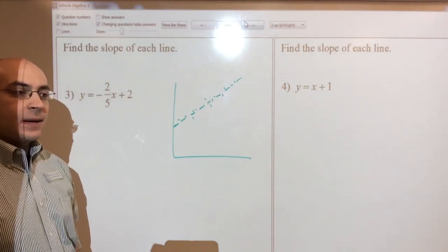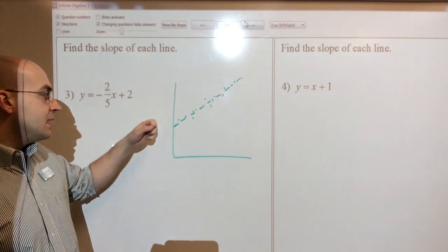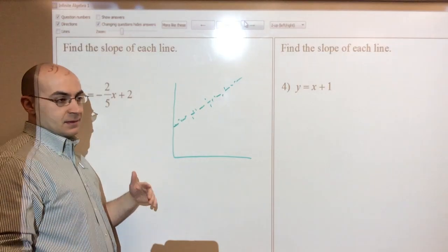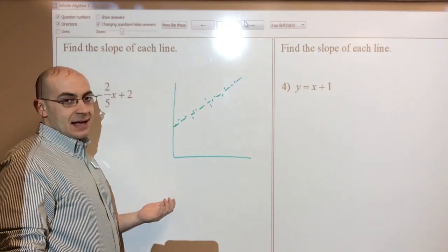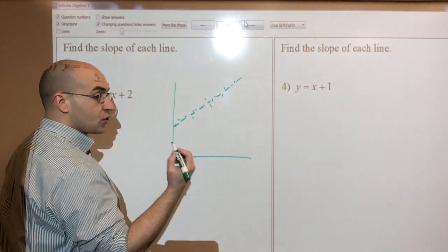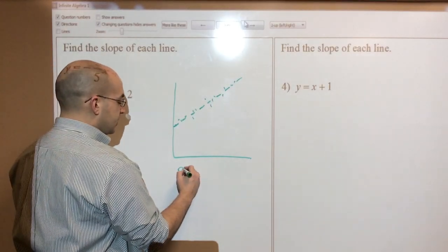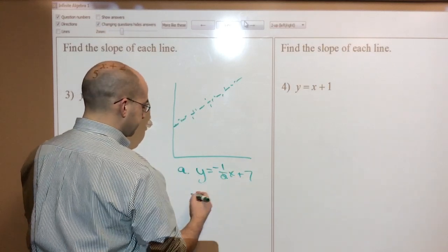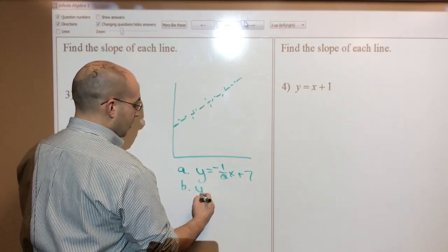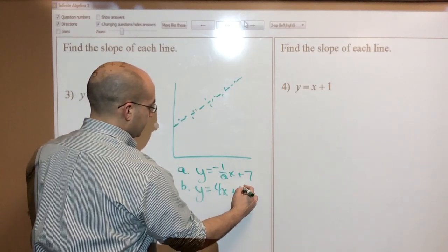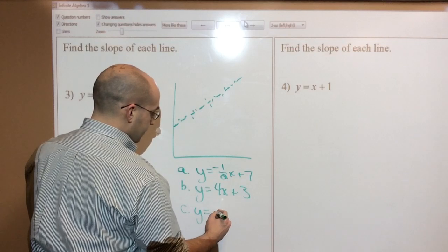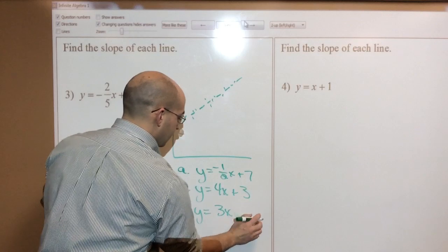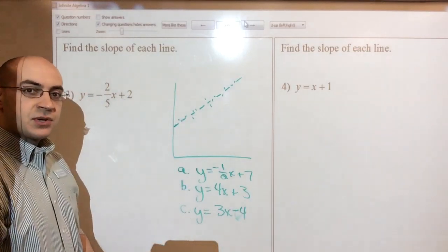The next step, and this is going to be on your unit eight test, is give me the equation of this line. Now, for the purposes of this video, you don't have to give me an exact, but let's pick from a couple. So let's say I gave you three lines. So let's say choice A is y equals negative one half x plus seven. Let's say choice B is y equals four x plus three, and choice C is y equals three x minus four. Of those three choices, there's some things that you can eliminate right away.